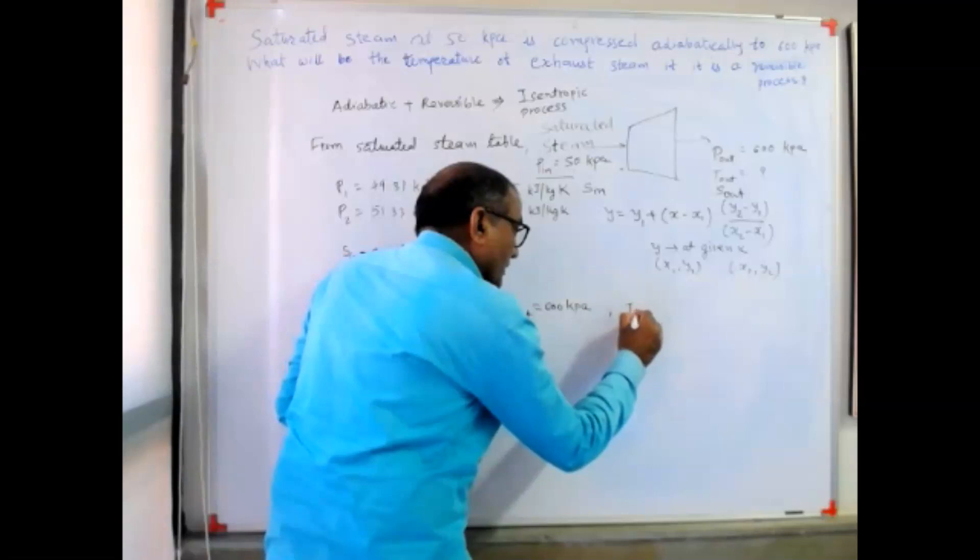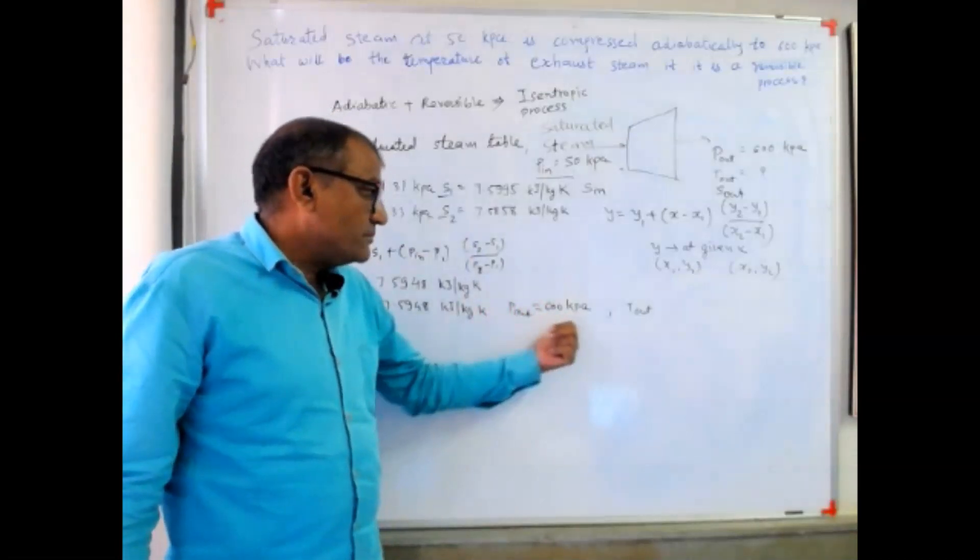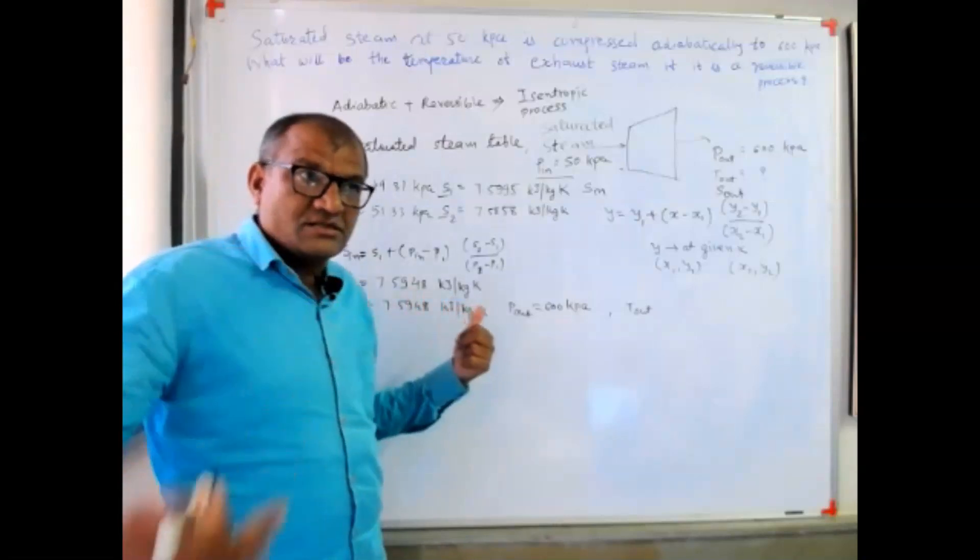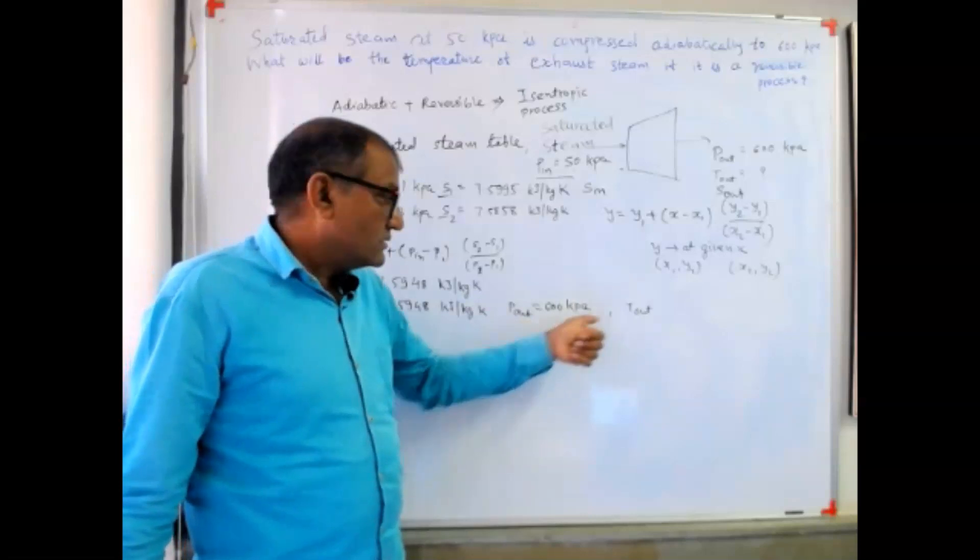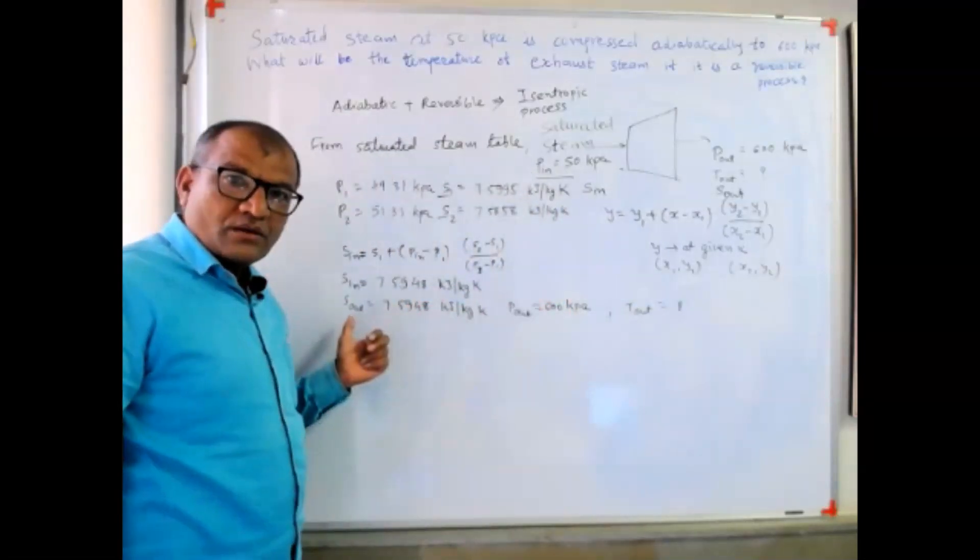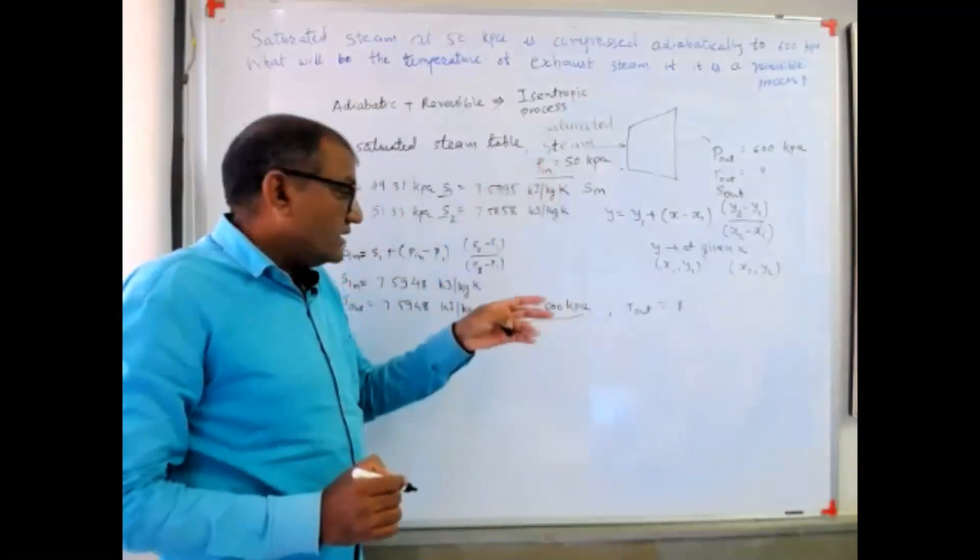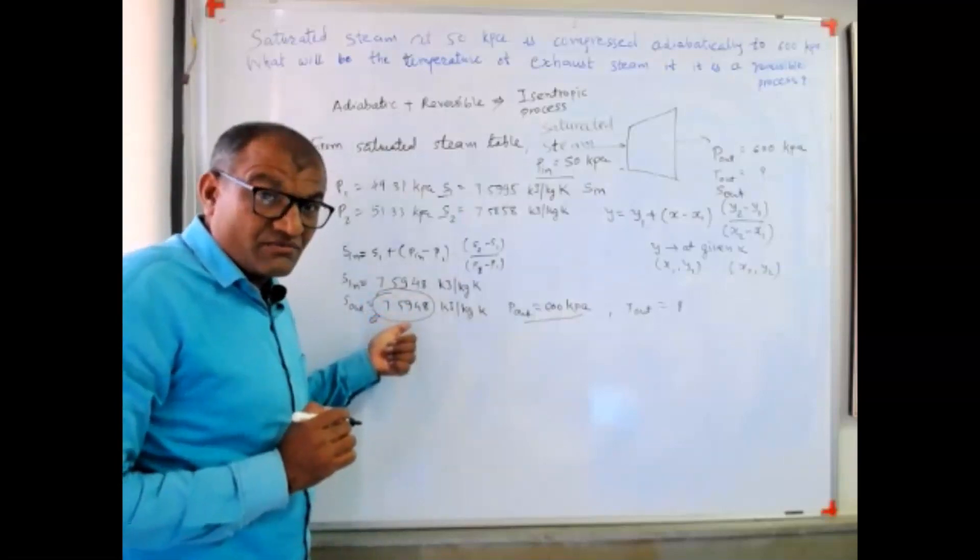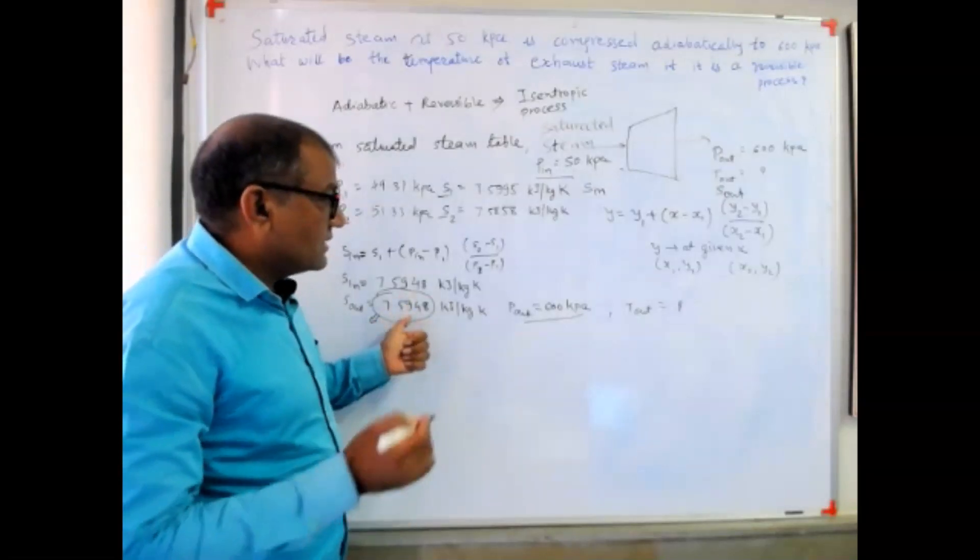I want to calculate t_out. So if you refer superheated steam table, at specific pressure there will be various values of temperature and various values of entropy, enthalpy, and internal energy. What we have to do is refer superheated steam table, find out column or row in which it is written 600 kilopascal, and there will be various values of entropy. Try to get this value somewhere.